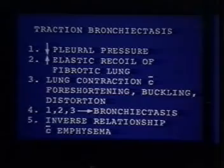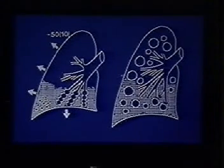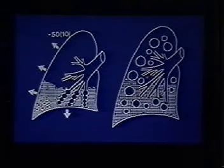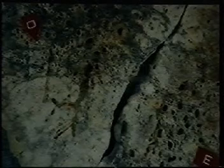Because of highly negative pleural pressures and the increased elastic recoil of this fibrotic lung, and because the lung is contracting and foreshortening, the bronchi buckle and dilate — this forms what we call traction bronchiectasis. One sees this in areas of advanced fibrosis, but in patients who have combined fibrosis and emphysema, usually one doesn't see much of this traction bronchiectasis, presumably because the emphysematous lung is more compliant and can dilate rather than subjecting the bronchi to dilatation forces.